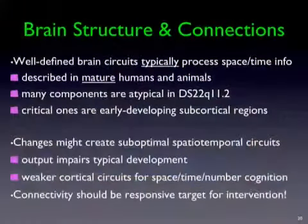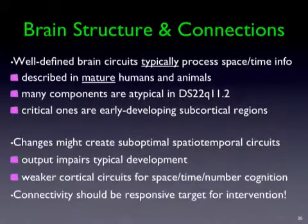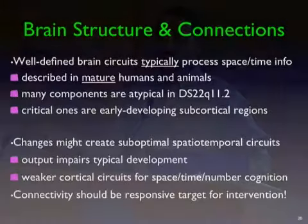My idea is that these subcortical regions are developing atypically early on, possibly under more direct genetic control. Therefore, the cortical networks we've talked about — parietal lobes, frontal lobes — may be the result and not the cause. Over developmental time, these early developing subcortical regions put out an atypical output, and you can't really build the right circuits. You end up with weaker circuits for space, time, and numbers — and those should be the targets. The connectivity between these areas should be the target for intervention, because connectivity can be changed.